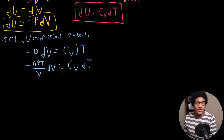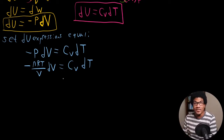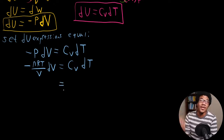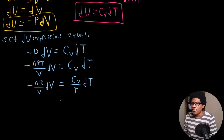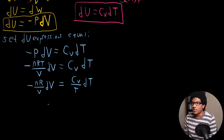To solve this differential equation, we integrate on both sides. We want like terms together: everything with respect to volume on the left-hand side, everything with respect to temperature on the right-hand side. So on the left we have negative NR over V, DV, and on the right we have CV over T, DT. Now we're ready to integrate on both sides.